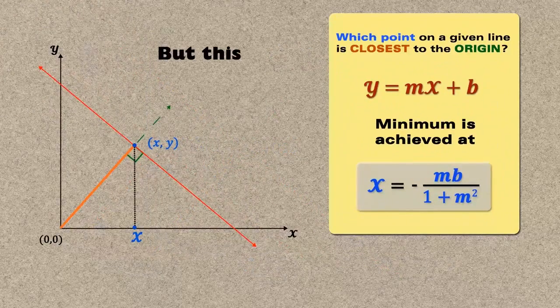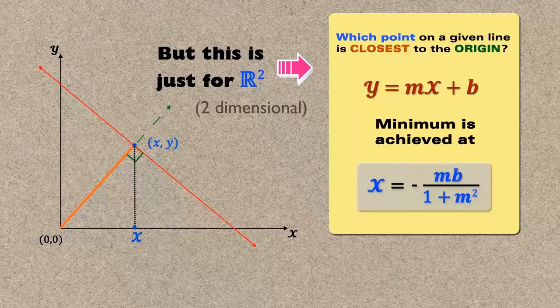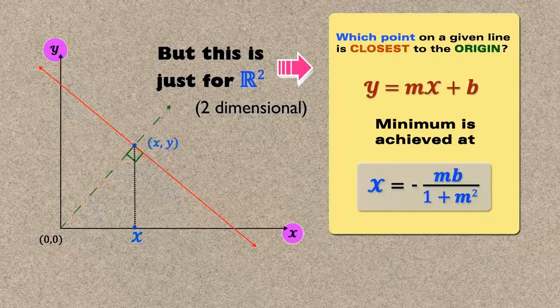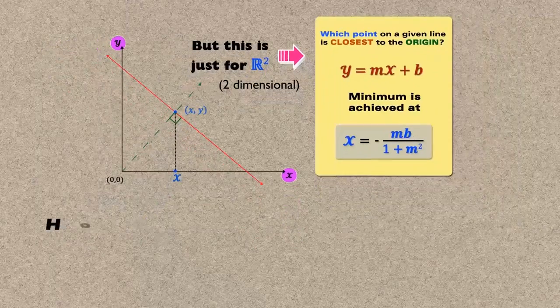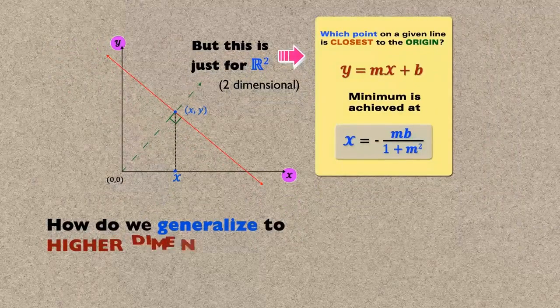But this is just for R2. How do we generalize to higher dimensions?